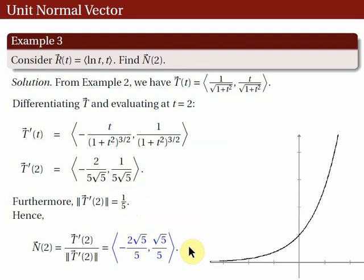Here's the graph of r(t), directed upward. The blue vector T(2) is tangent to the graph of r in the direction of r. The red vector N(2) is the unit normal vector at t = 2, and it points towards the concave side of the curve.